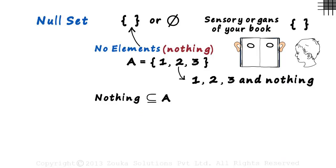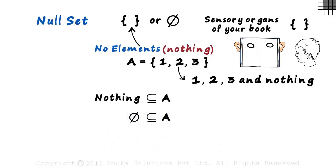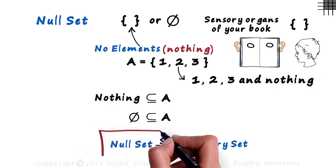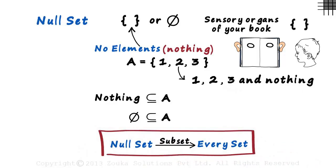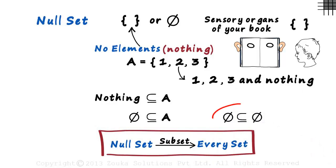And that's why we say that the null set is a subset of set A. Because every set has nothing apart from the other elements, the null set is a subset of every set. And yes, the null set is also a subset of the null set since both sets have nothing. And this is also obvious as we know that every set is a subset of itself.